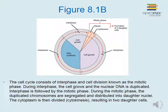The cell cycle consists of interphase and cell division, known as the mitotic phase. During interphase, the cell grows and the nuclear DNA is duplicated. Interphase is followed by the mitotic phase, during which the duplicated chromosomes are segregated and distributed into daughter nuclei. The cytoplasm is then divided — called cytokinesis — resulting in two daughter cells.